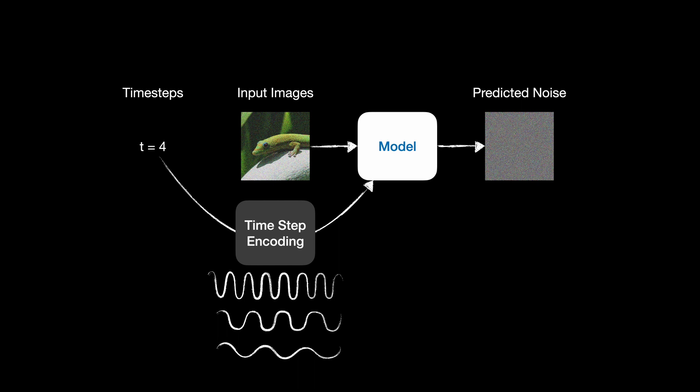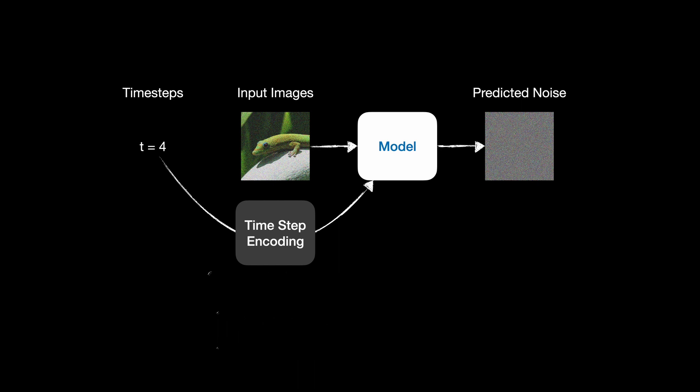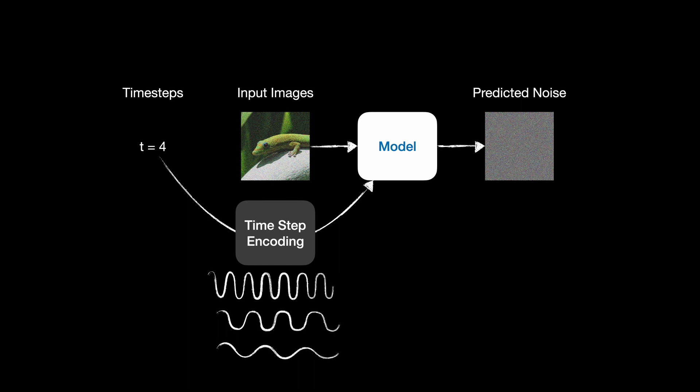In its simplest form, we basically pass the raw position indices through a bunch of sine and cosine functions having different frequencies, and what we get are the embeddings. Diffusion models are overall a lot more stable than GANs. GANs require a delicate balance between the generator and the discriminator, and are highly sensitive to even minor changes, while in a diffusion step it's harder to fail that catastrophically.